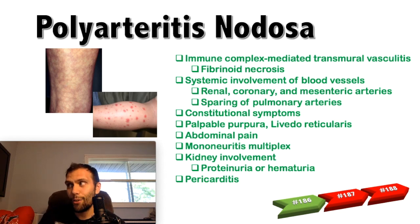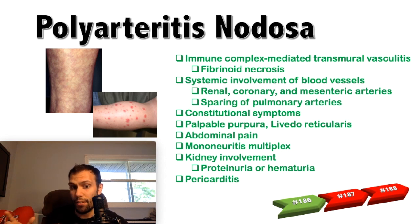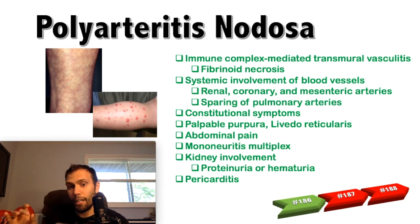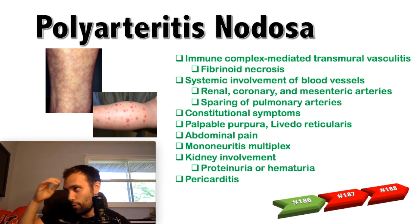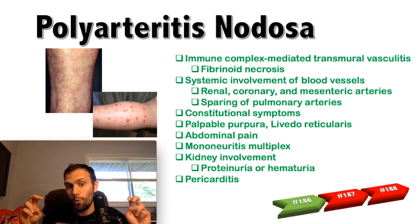Almost every case of polyarteritis nodosa has fever, fatigue, weakness, loss of appetite, and weight loss — constitutional symptoms. There can also be cutaneous eruptions, purpura, livedo reticularis, and the peripheral nerves are commonly affected. Mononeuritis multiplex — simultaneous or sequential involvement of individual nerve trunks — is the most common neurologic sign, which can start asymmetric and become symmetric over time. But the key points are: kidneys almost always affected, lungs almost never.